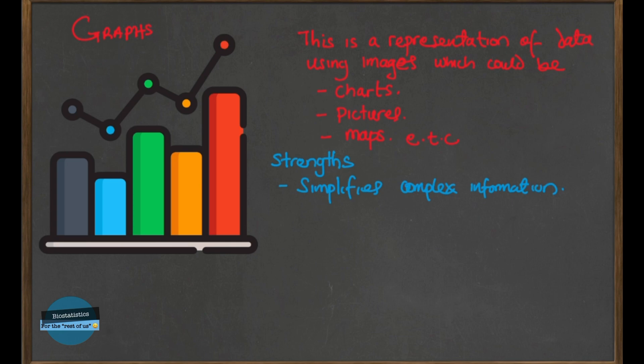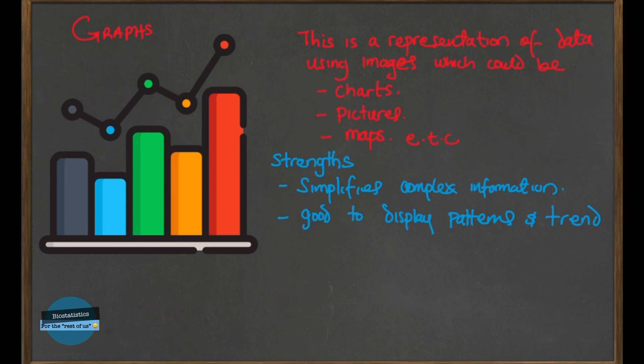A graph does this by using images to emphasize data patterns or trends, which is very useful in summarizing, explaining, exploring, or showing the strength in data. It's very good to display patterns and trends because you can see them visually. While tables are very effective in presenting large amounts of data, graphs can be used in place of tables to present small sets of data in a way that is appealing and easy to understand.